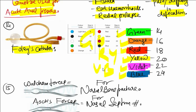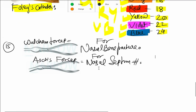Green is 14, orange 16, red is 18, yellow is 20, violet is 22, and blue is 24 gauge.